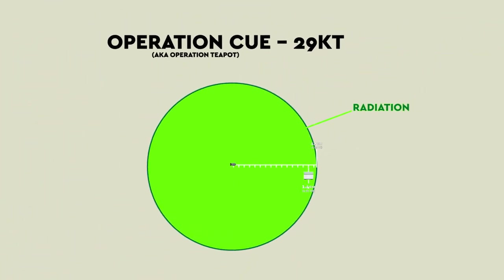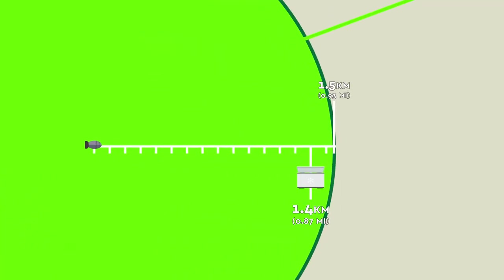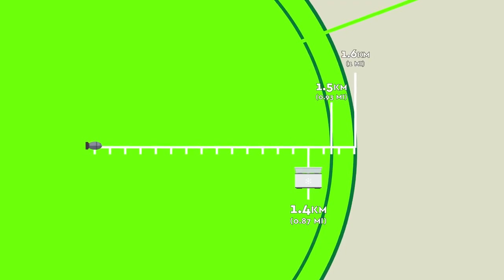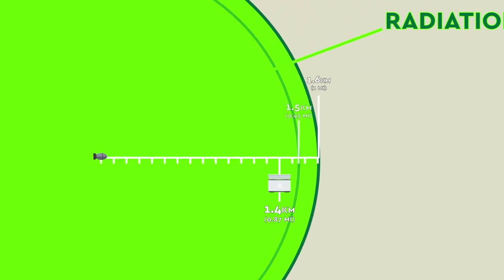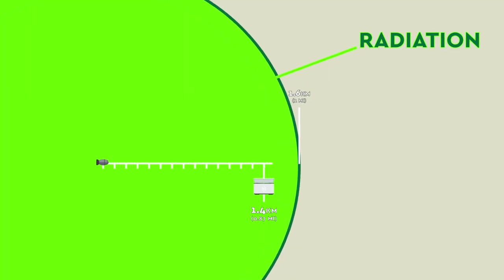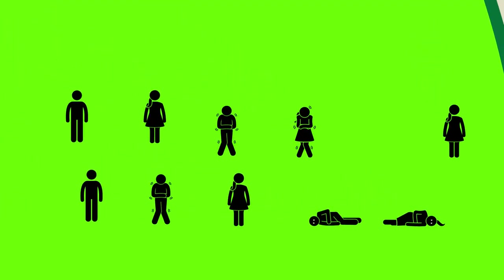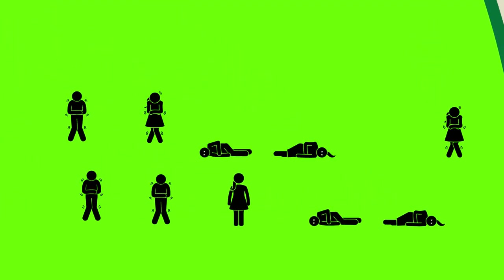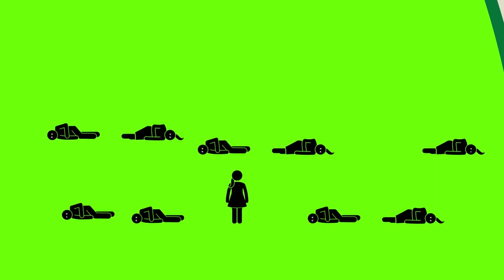For our larger bomb, Smokey, that radius would have been 1.6 kilometers. So from this point on, we'll treat them both the same to keep things simple. Anyone caught inside this zone would be in serious trouble. We're talking death rates of 50% at best and 90% at worst. If you were lucky, you might die in a few hours. Others could linger on for weeks.